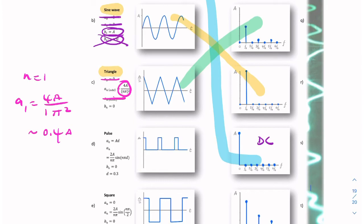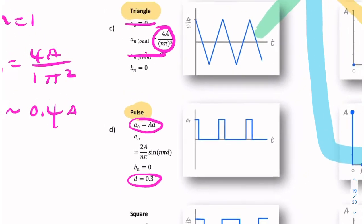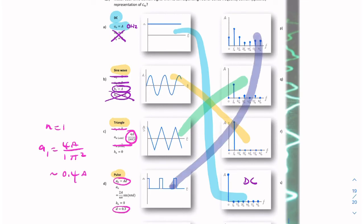Let's look at the next signal — a rectangular pulse. We know there is a DC term: a0 equals A times D, and D is 0.3, so the DC term has an amplitude of 0.3a. Looking at which spectrum has a DC term of 0.3a — here the DC term looks like it's one third of A, which gives it away. So we can match this rectangular pulse with that spectrum.